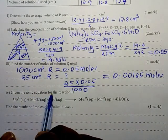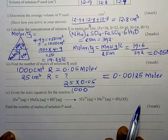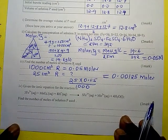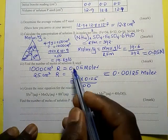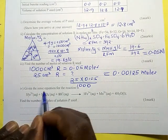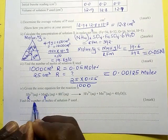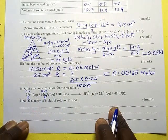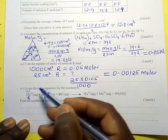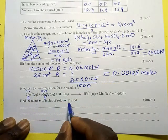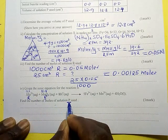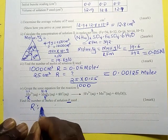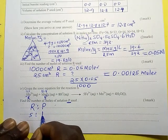Next question: given the ionic equation for this reaction — which is always provided, so you don't need to worry about deriving it. R was the ammonium iron(II) sulfate. The volume of R used was 25 cm³, and the volume of P used was 12.8 cm³. Now we use the mole ratio from the ionic equation: R to P is 5 to 1.